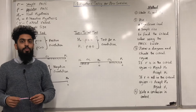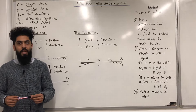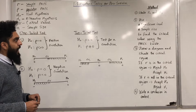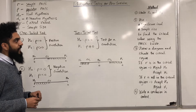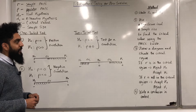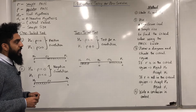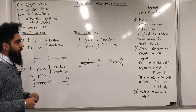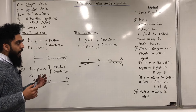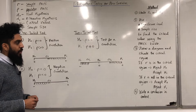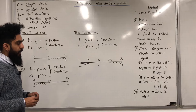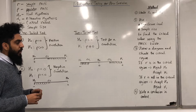Now I'm going to explain how to structure your solution for hypothesis testing for zero correlation. Here is a step-by-step method. Step 1: state H0 and H1. Step 2: use the significance level and the sample size given in the question to find the critical value using the PMCC table — the product moment correlation coefficient table — which is given in the formula booklet. Step 3: draw a diagram and shade the critical region. If R is in the critical region, reject H0 but accept H1. If R is not in the critical region, accept H0 but reject H1. Step 4: write a conclusion in context.